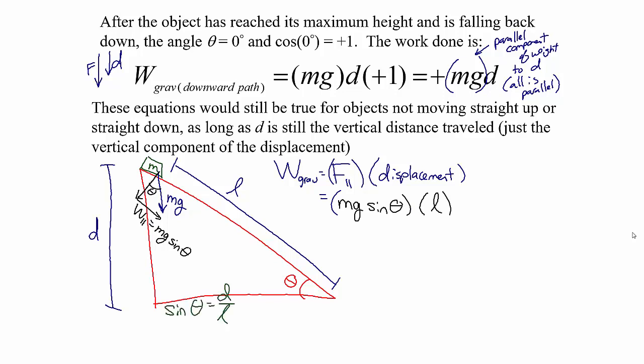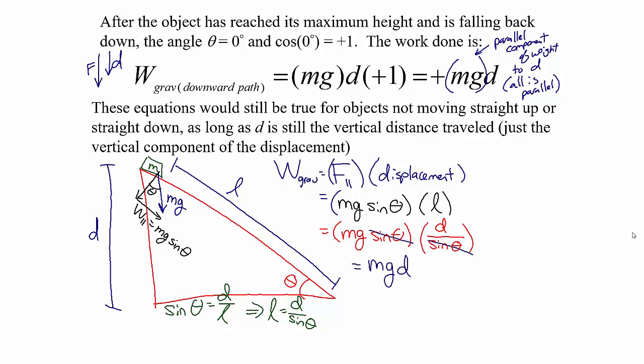Looking at this ramp, sine of theta is the opposite side over the hypotenuse — the vertical height d over the hypotenuse l. In the equation, we can replace sine theta with d over l, or rearrange so that l equals d over sine theta. Substituting that in, we have mg sine theta times d over sine theta, which gives us mg times the vertical distance. So if something is sliding down the ramp, the work done by gravity is positive mg times the vertical distance.